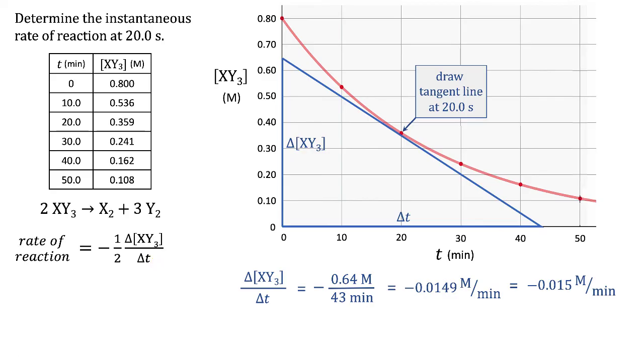If we had X₂ data instead, we'd take change of X₂ with respect to time, divide by one (its coefficient), and it's already positive, so we leave it alone. If we had Y₂ data, we divide by three (its coefficient), which is the same as multiplying by one third, and again it's already positive.